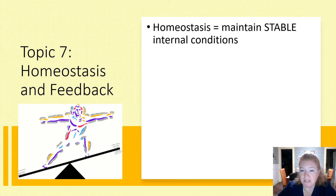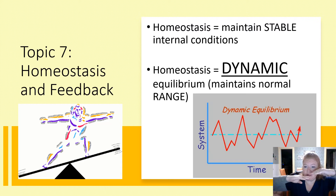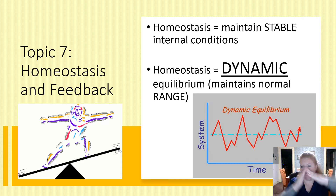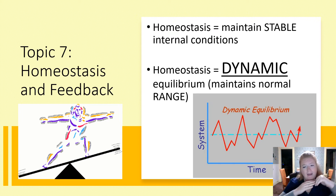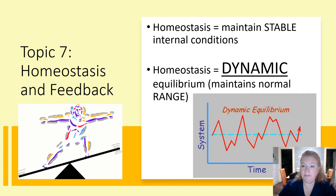Homeostasis is for maintaining stable internal conditions. But remember, homeostasis is dynamic — that does not mean your body temperature is 98.6 degrees 100% of the time. It means it fluctuates up and down, but not over too great a range, and your body continues to monitor it.